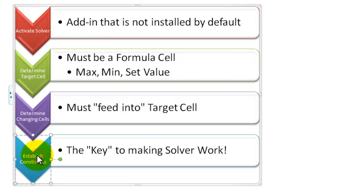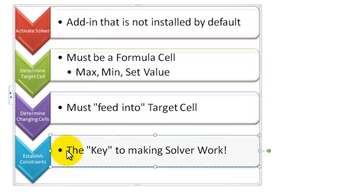The fourth key point is establishing constraints, and this is what sets Solver apart from Goal Seek. What we're doing is asking Solver to take into consideration real-world constraints.